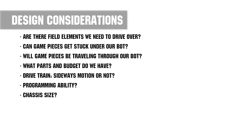How big do we want our chassis to be? This may affect wheel size, amount of wheels, and motor placement. What gear ratio should we use? 20 to 1 is a good default option. 40 to 1 is also a common gearbox, but it will be slower, though it does have more torque. Wheel size will also affect speed versus torque — larger wheels have more speed and smaller wheels have more torque.